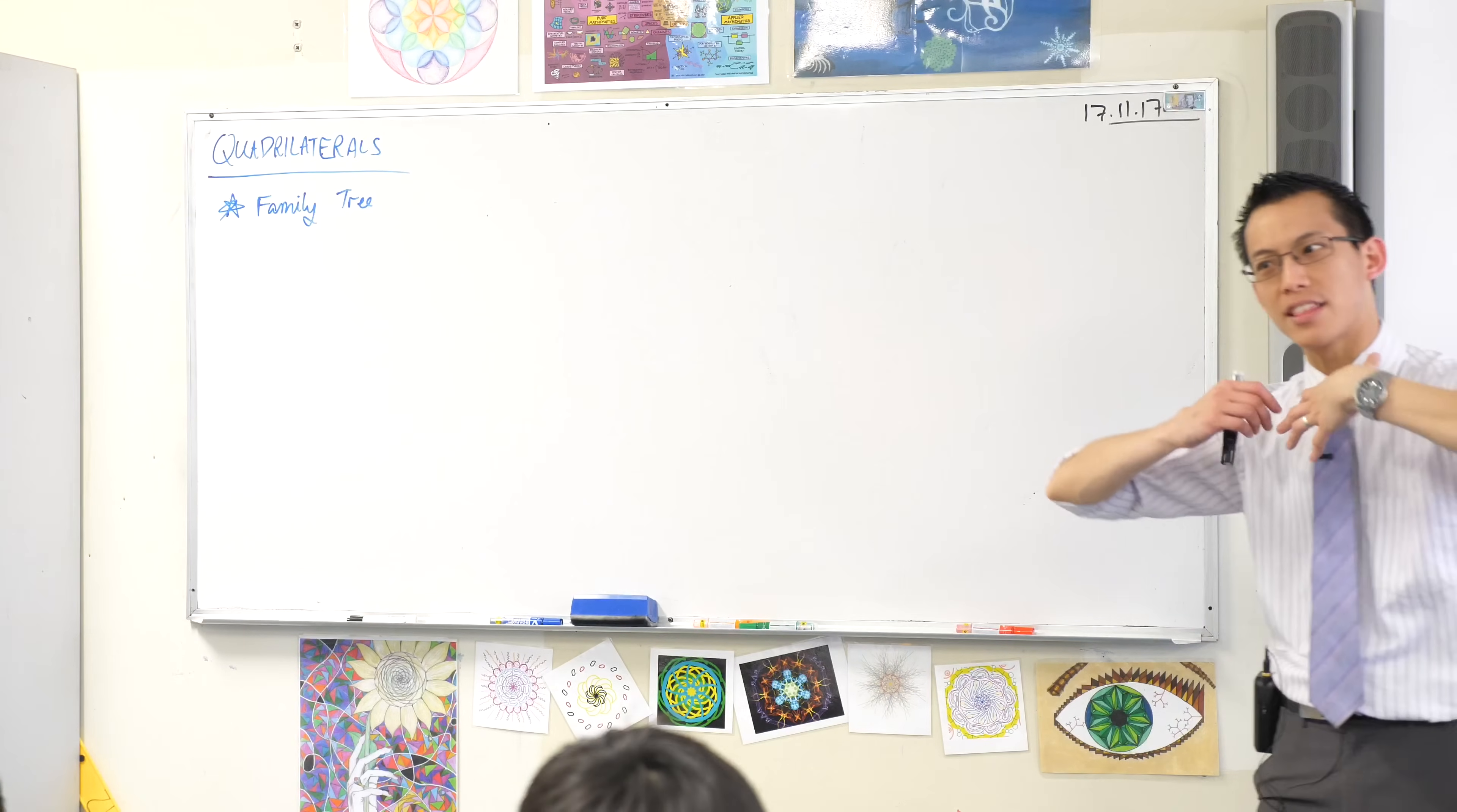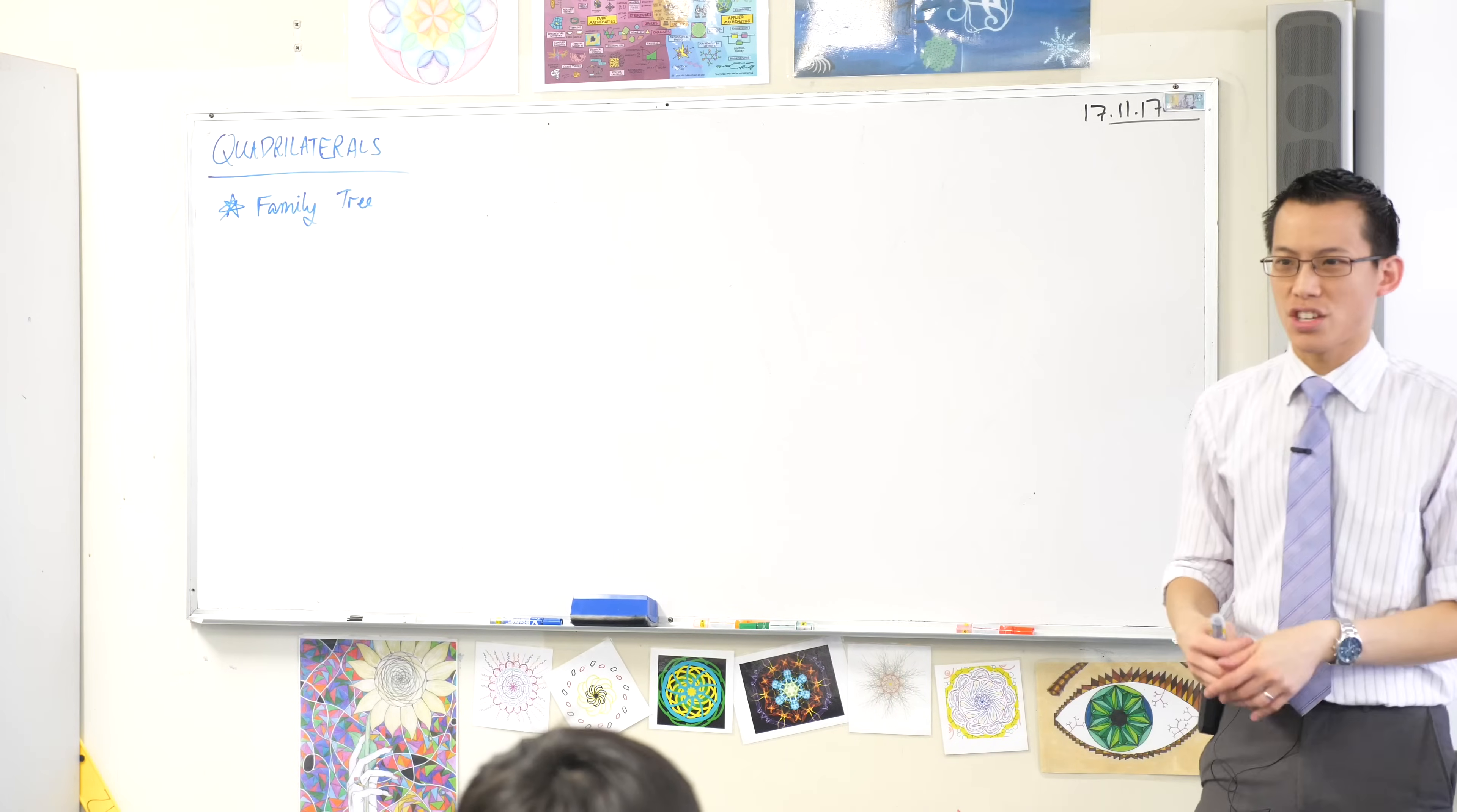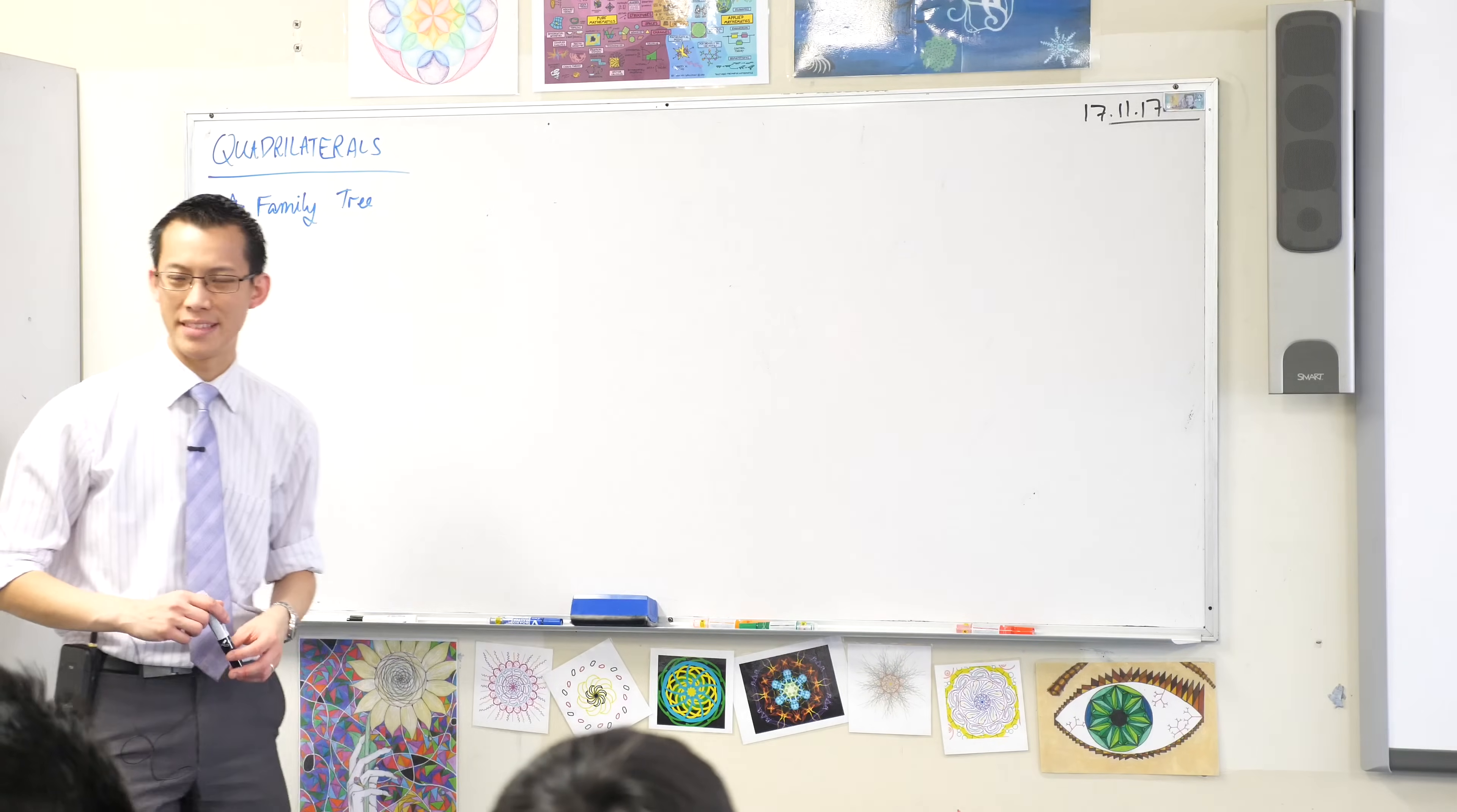So what we're going to do is try and tease out the relationships between these, because in the textbook what you'll find is a list of shapes, but that list is just kind of like, here's a random grab bag of things that have nothing necessarily to do with each other. Jacob, are you paying attention? Thank you.